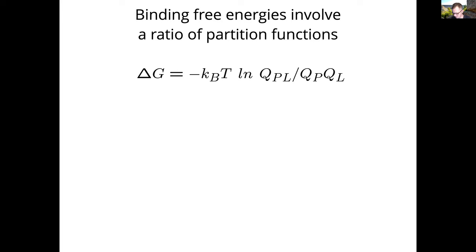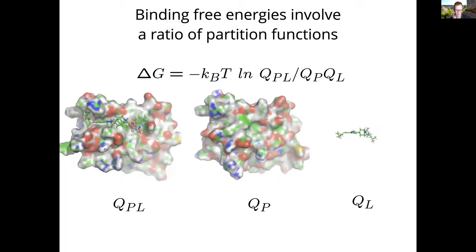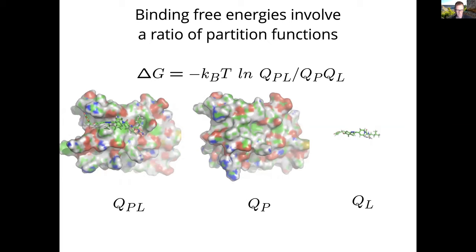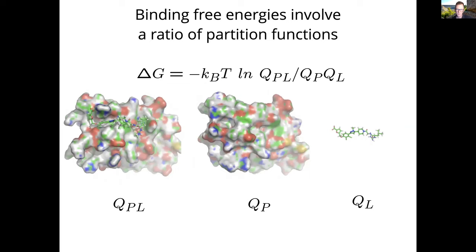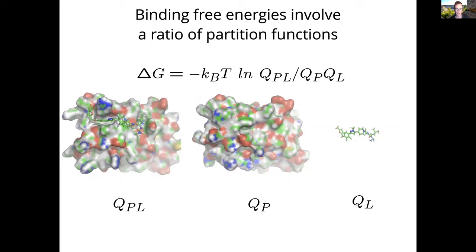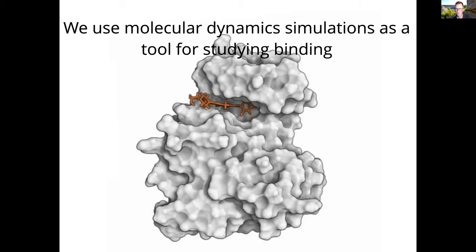What we're interested in predicting is delta G, the binding free energy, which is a ratio of partition functions — integrals over the relevant configurations of the different systems involved: the protein-ligand complex, the protein alone, and the ligand in solution. As a tool for doing this, we use molecular dynamics simulations of these different environments. We're able to get the ratio of these partition functions out of the simulations to compute the binding free energy. Molecular dynamics simulations start with a description of the forces between all atoms in a system, then integrate Newton's equations of motion to solve for what happens as a function of time.